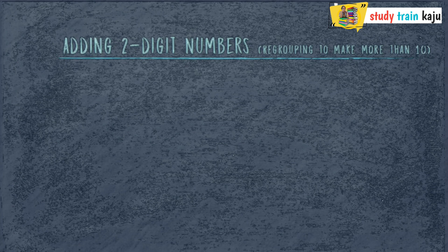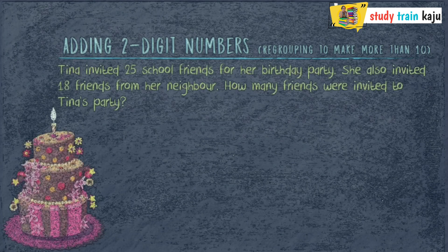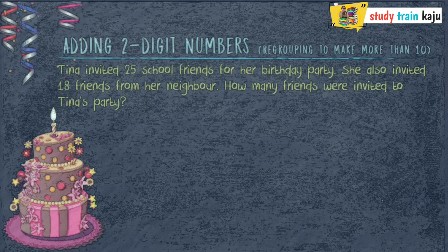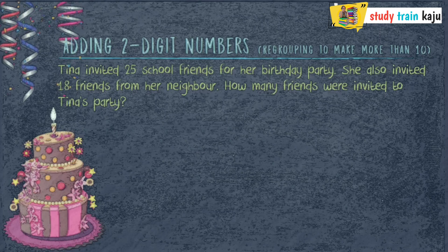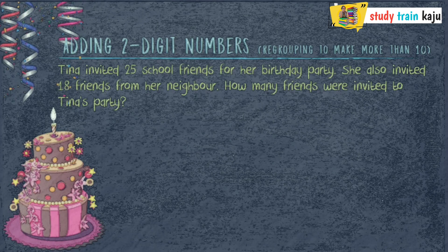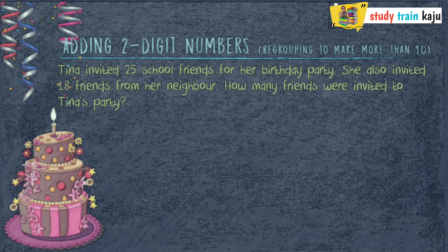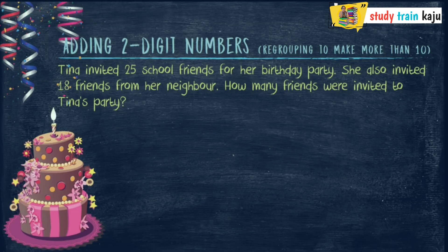Next, let's understand how to add 2-digit numbers with regrouping to make more than 10. Tina invited 25 school friends for her birthday party. She also invited 18 friends from her neighbourhood. How many friends were invited to Tina's party?